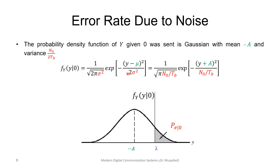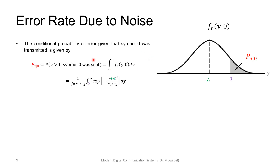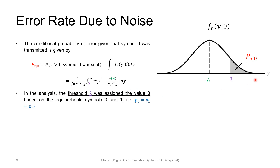Remember, there was a factor of two here from 2·TB and two here — they are going to cancel. Now to find the error rate analysis, you need to define a threshold. This is the threshold: if the signal is above it, we've committed an error because we're closer to the positive side. The conditional probability of error given that symbol 0 was transmitted is given by the following expression. To find the exact probability, you integrate from lambda to infinity.